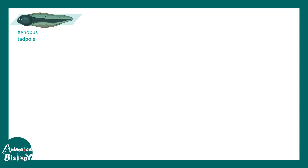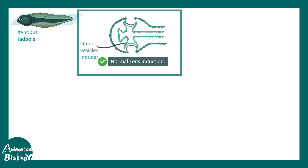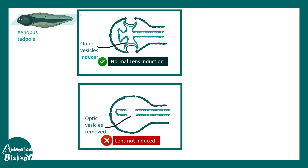One of the best examples comes from Xenopus eye development. Here is a Xenopus tadpole — we cut a horizontal section and you can see two eye-like structures. The innermost part is the optic vesicle, which is basically the inducer of lens development. When optic vesicles are present in the proper location, lens induction is triggered.